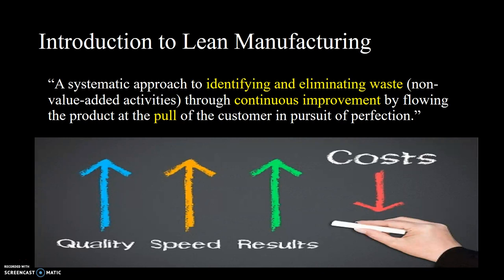In case you don't have any idea about manufacturing, let me go through it first. Manufacturing is a process in which we convert raw materials or any input into output. The connecting point between input and output is the process. In this process, we are going to eliminate the waste — that is called lean manufacturing.